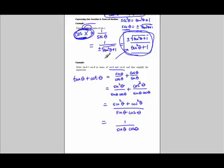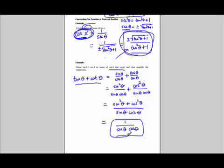So tangent theta plus cotangent theta simplifies to one over sine theta cosine theta. These two expressions are equivalent — for any value of theta, plugging into either one gives the same result. That's the nature of an identity: it doesn't just work for special values, it works for any value of theta.